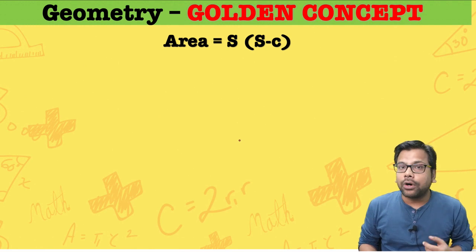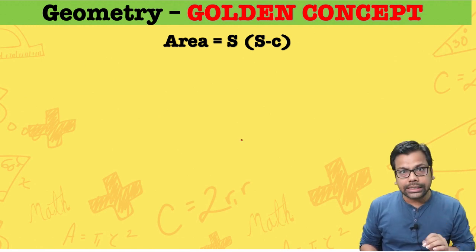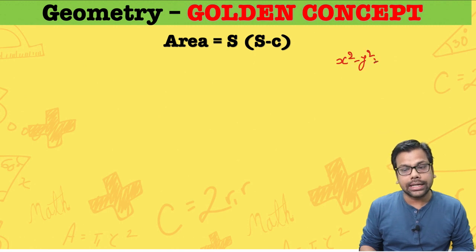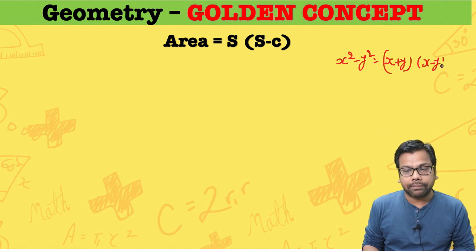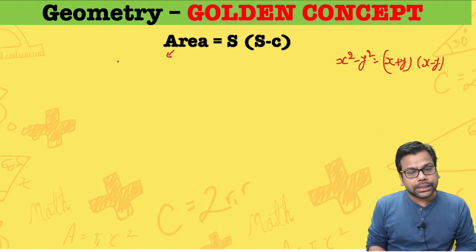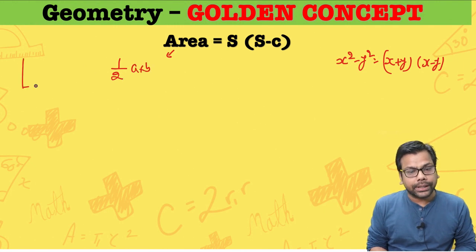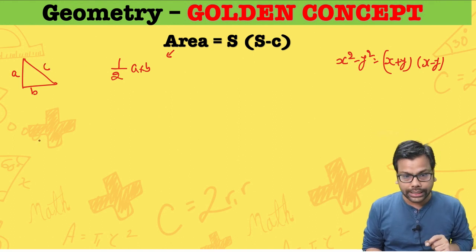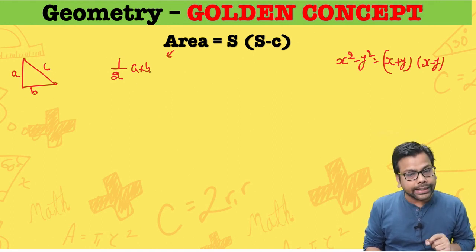Let us look at the concept behind the golden formula. I will use an algebraic identity for this, which is: x squared minus y squared equals (x plus y) into (x minus y). I want to use this formula. We know Area equals half into a into b, where a and b are the two legs and c is the longest side (hypotenuse).